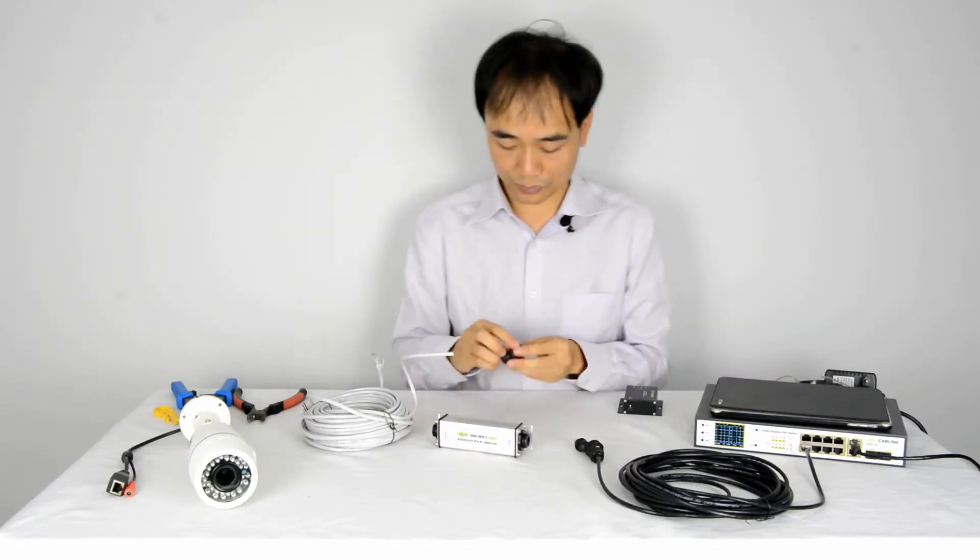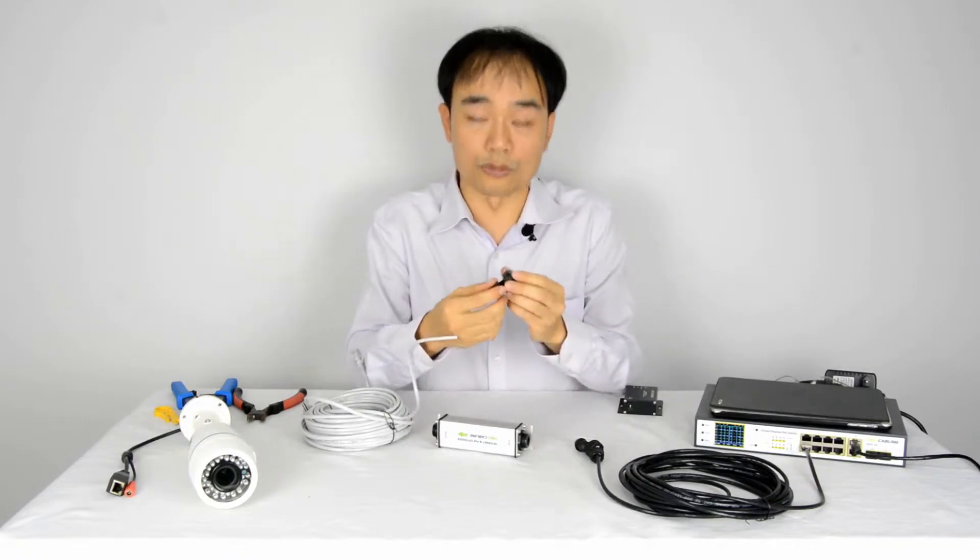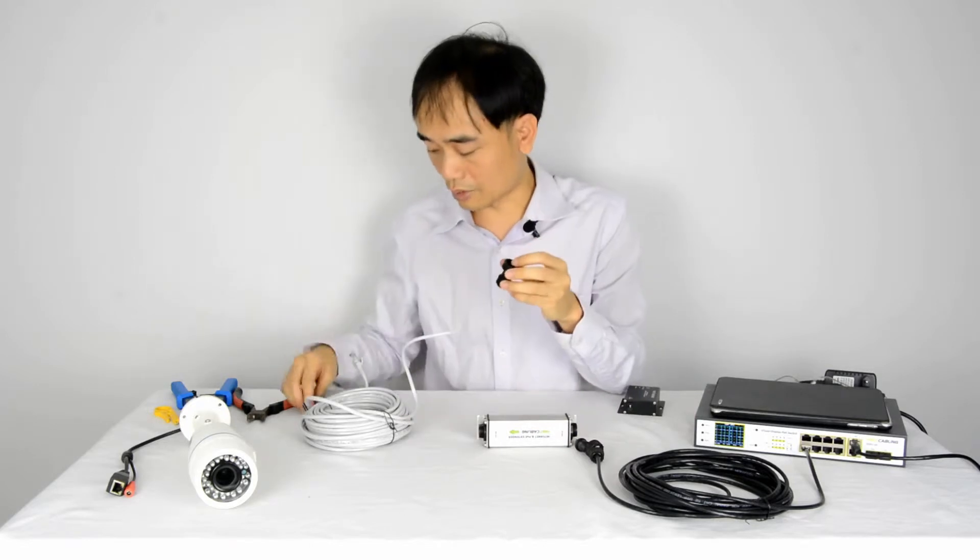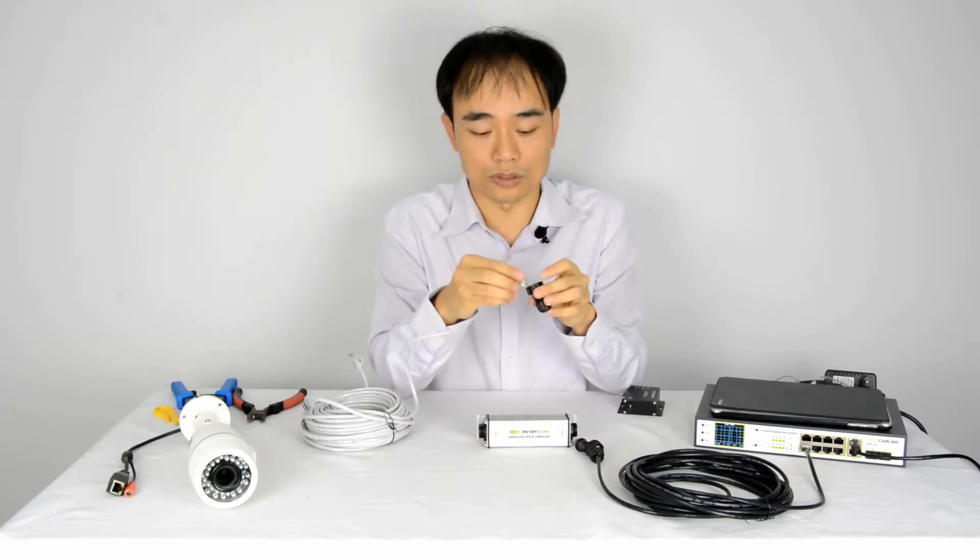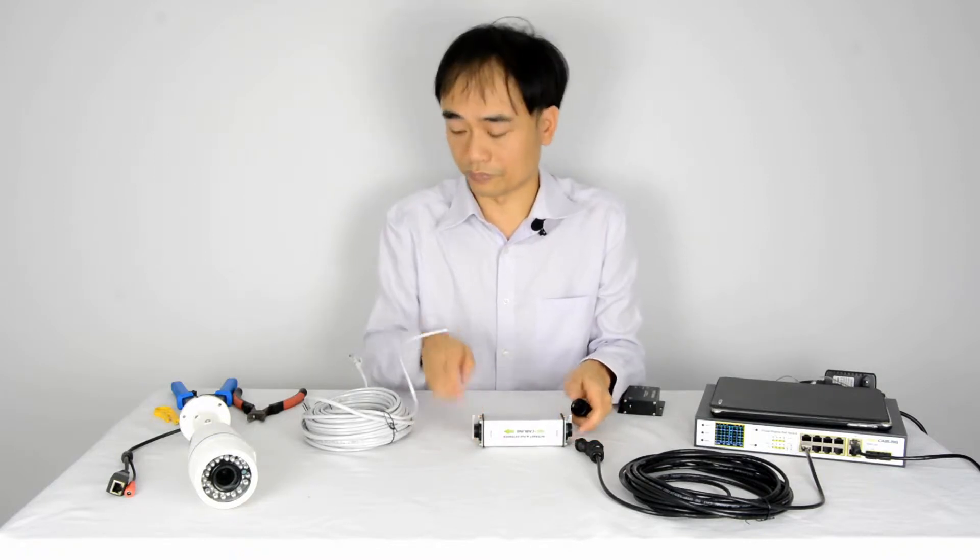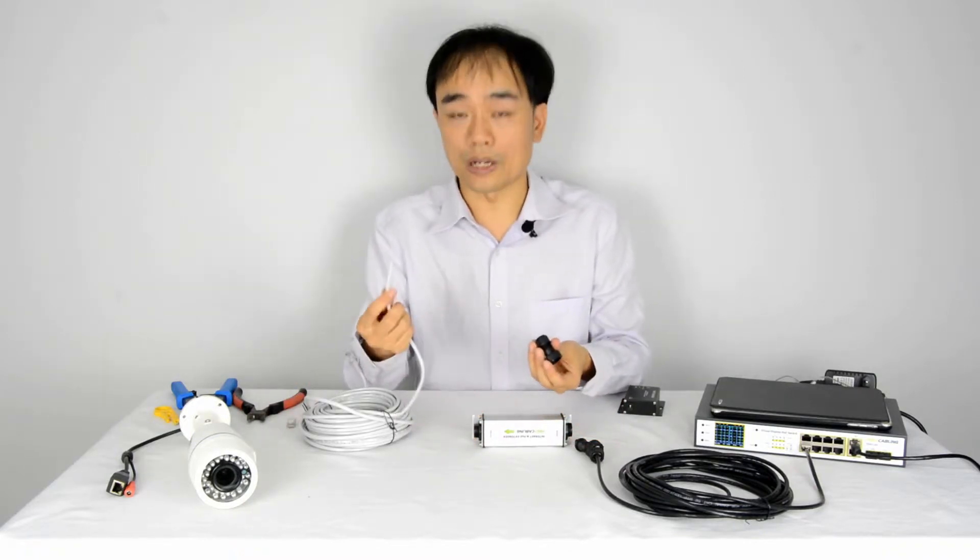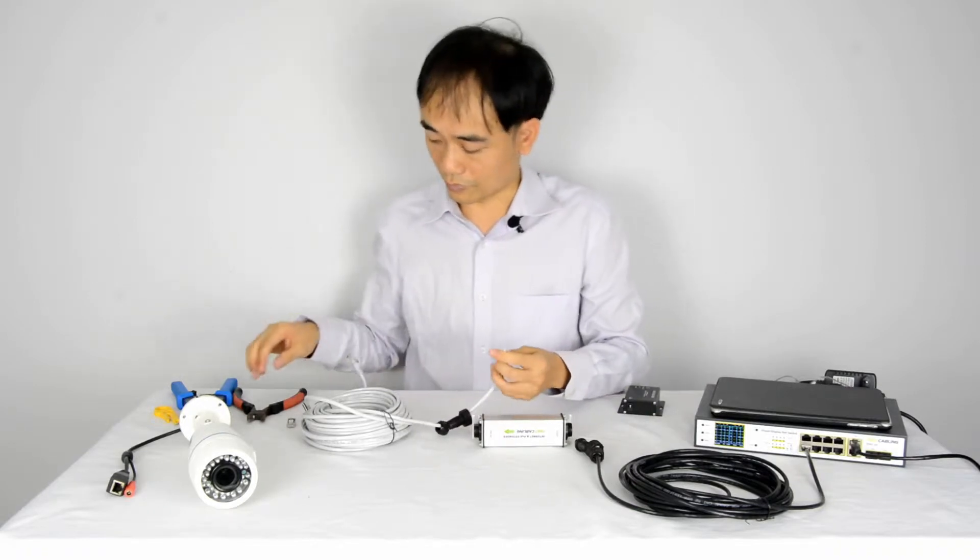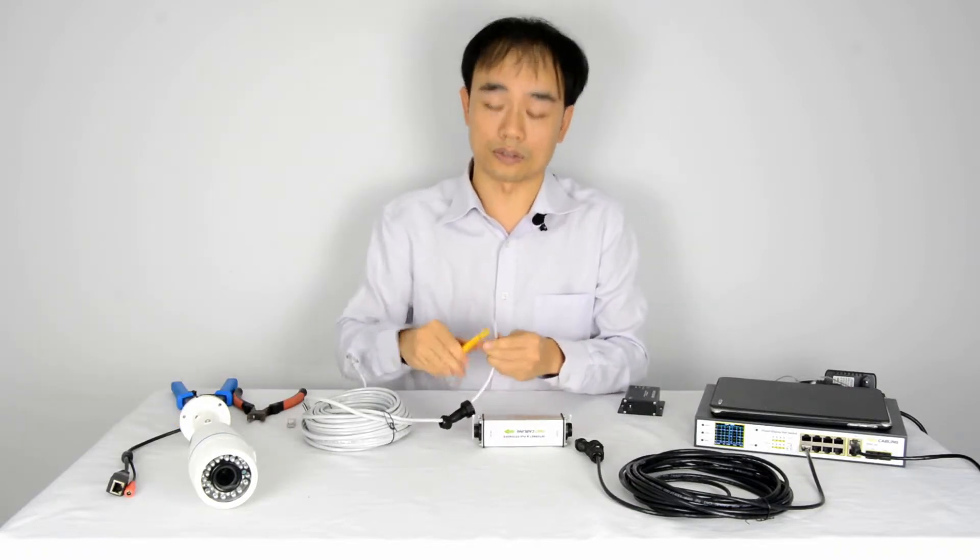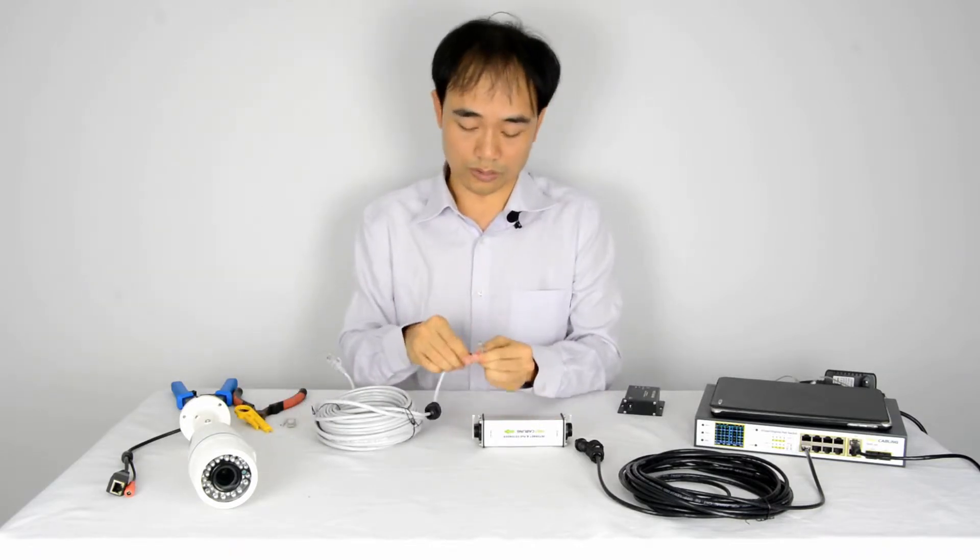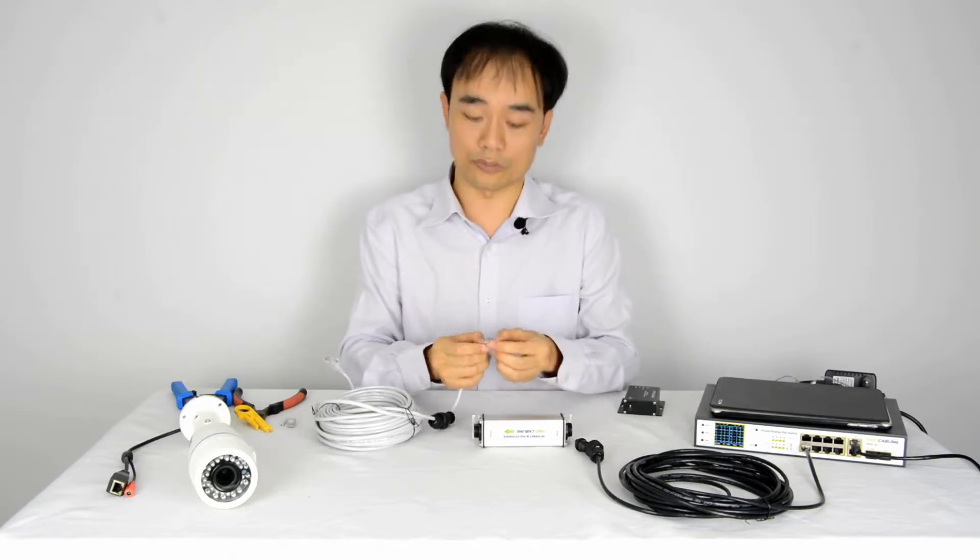Now let's get started. First, this is the waterproof cap, and we need to keep the RJ45 connector inside the waterproof cap, so the whole connection will become waterproof. Now first, we pass the internet cable over the cap. Then we peel the cable. We get the right sequence for the RJ45.